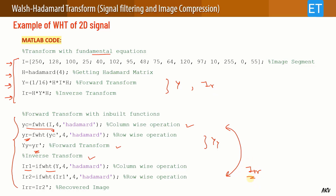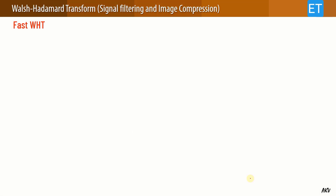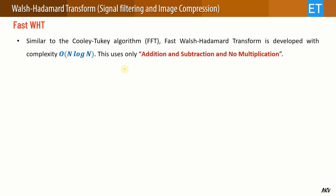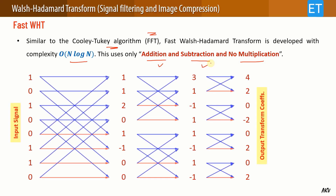The Fast Walsh-Hadamard Transform is similar to the Cooley-Tukey algorithm used for FFT, with the same N log N complexity. It uses only addition and subtraction — no multiplication — which is why this algorithm is faster. In previous matrix multiplication cases, all three operations (addition, subtraction, multiplication) were needed.